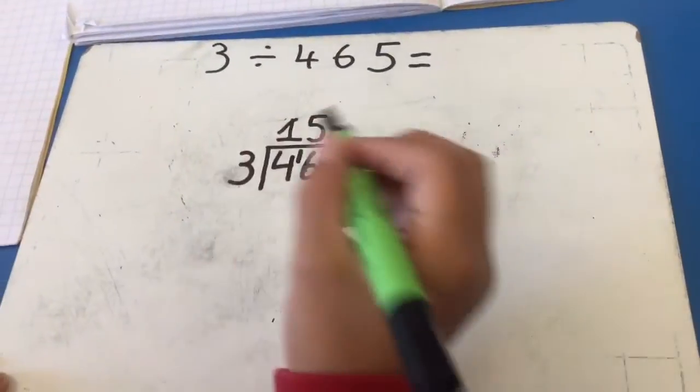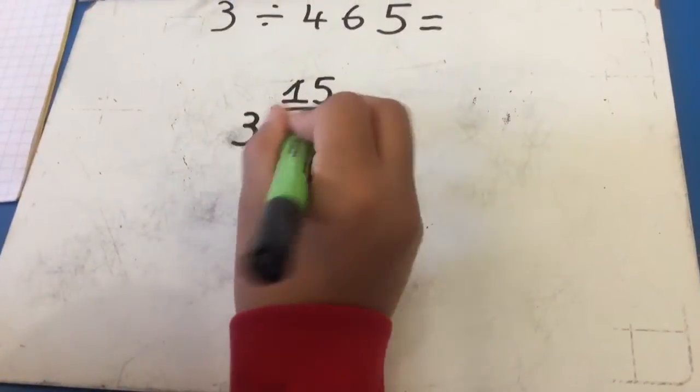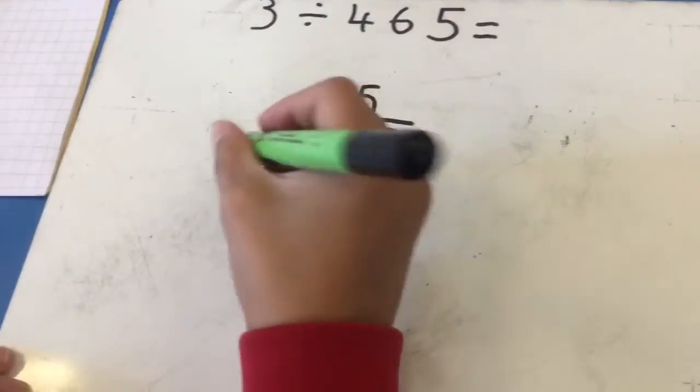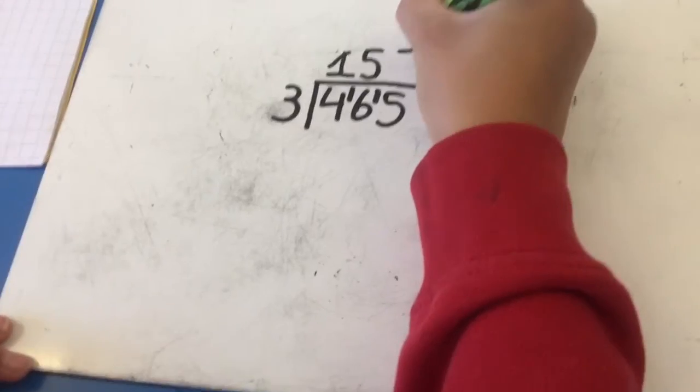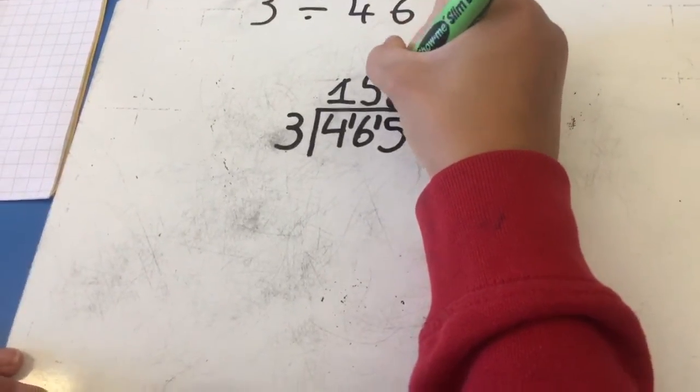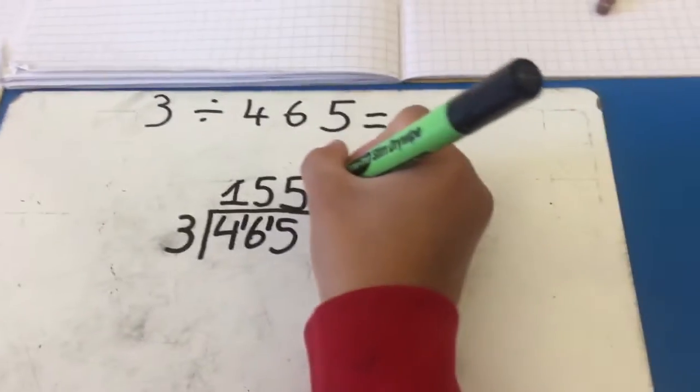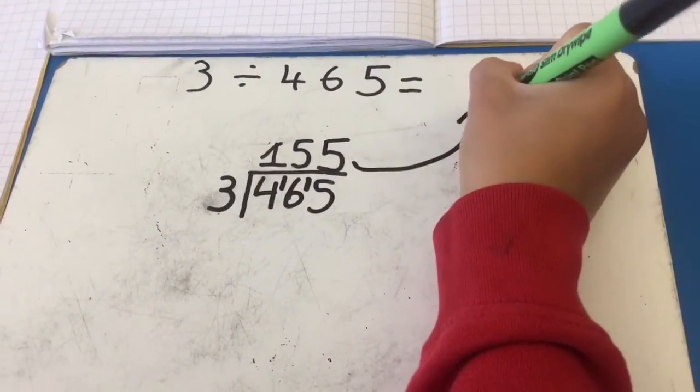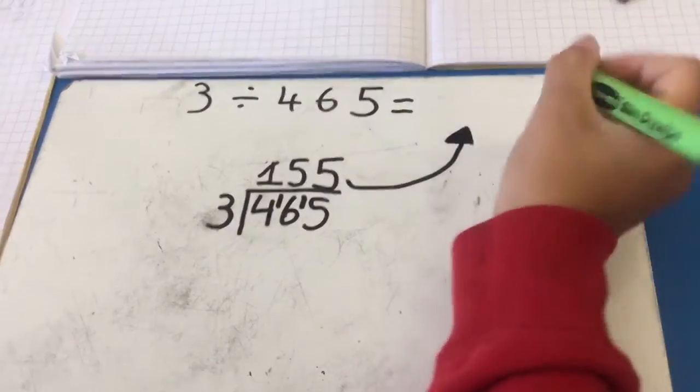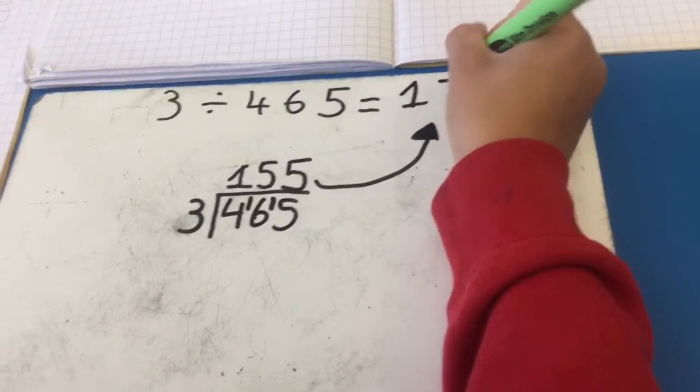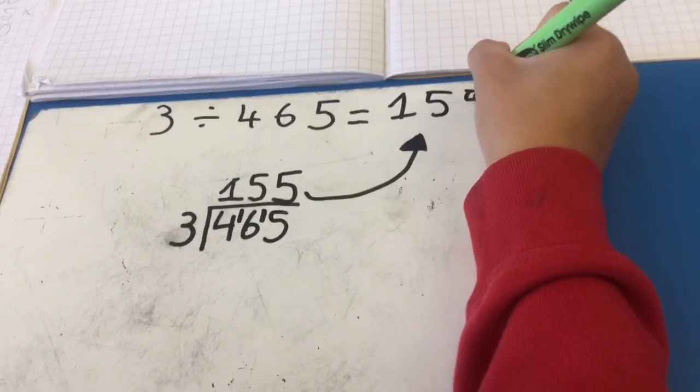Now, we do how many 3s are there? 15, which is 5. And your answer is 155.